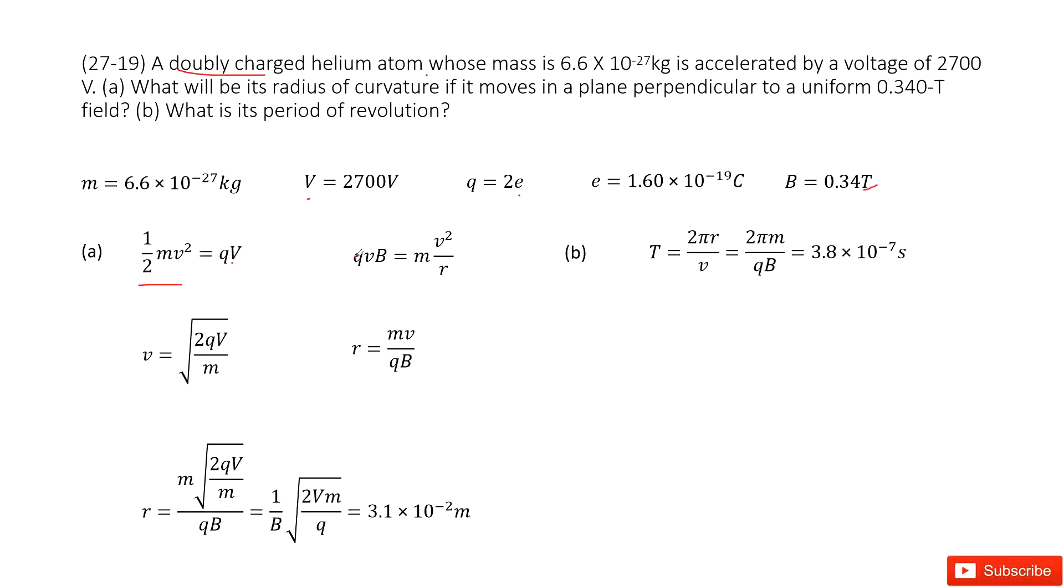Then this charged particle does circular motion in the magnetic field. So the Lorentz force becomes the centripetal force. The Lorentz force qvB equals mass times the centripetal acceleration v squared divided by r. We write it there.